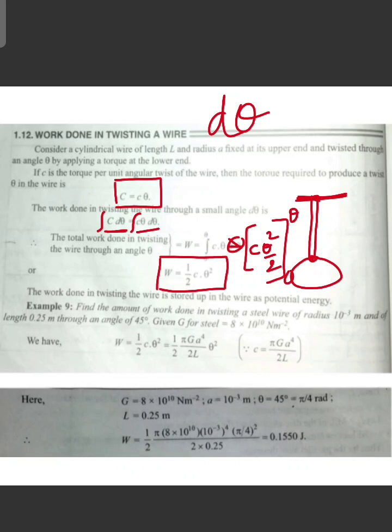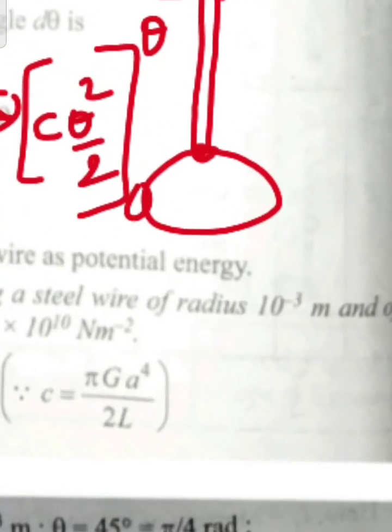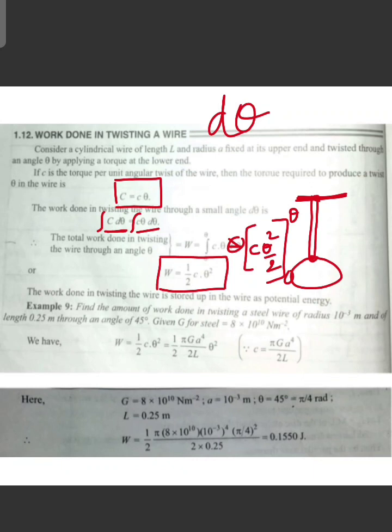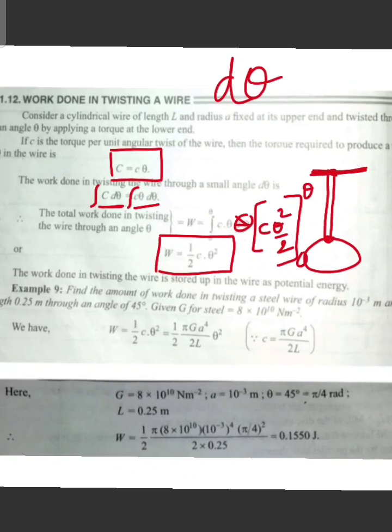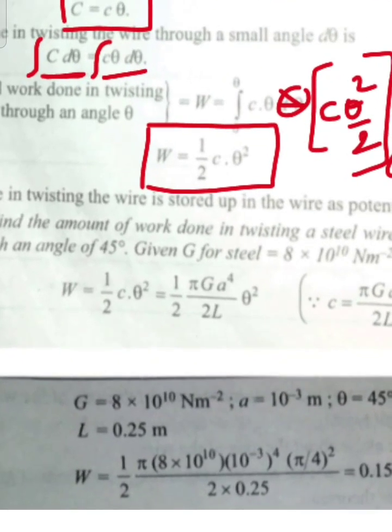The work done in twisting a steel wire of radius 10 power minus 3 meter, length 0.25 meter, twisted through 45 degrees — G value is 8 into 10 power 10 N per meter squared. W = half C into theta squared.